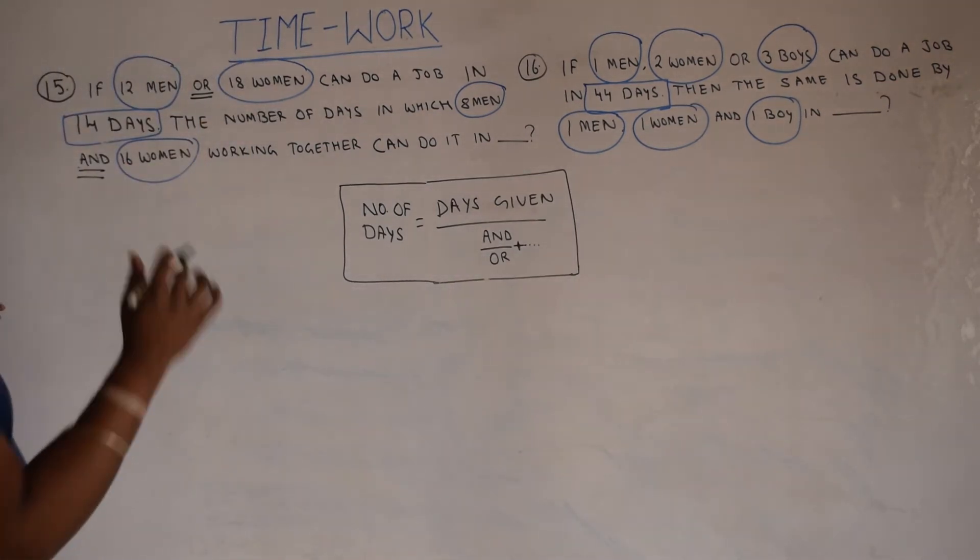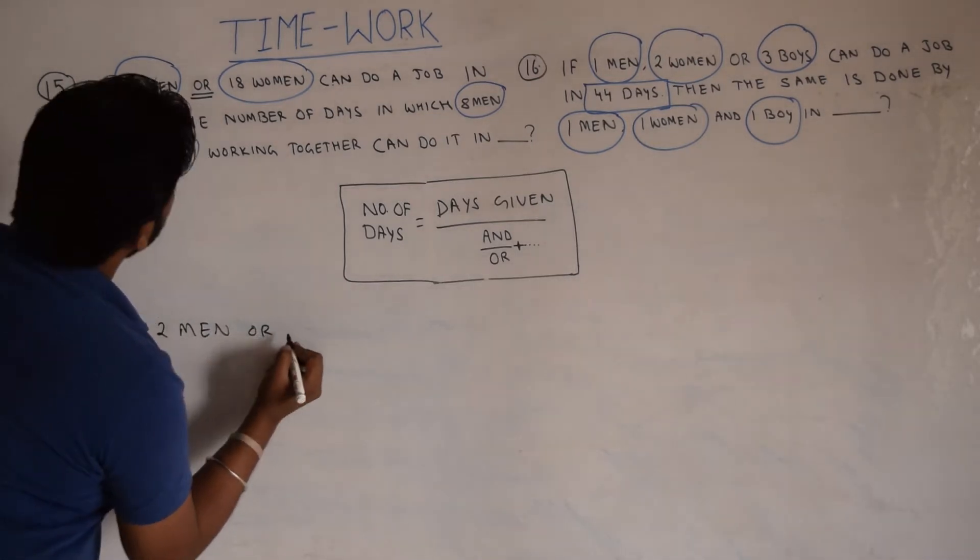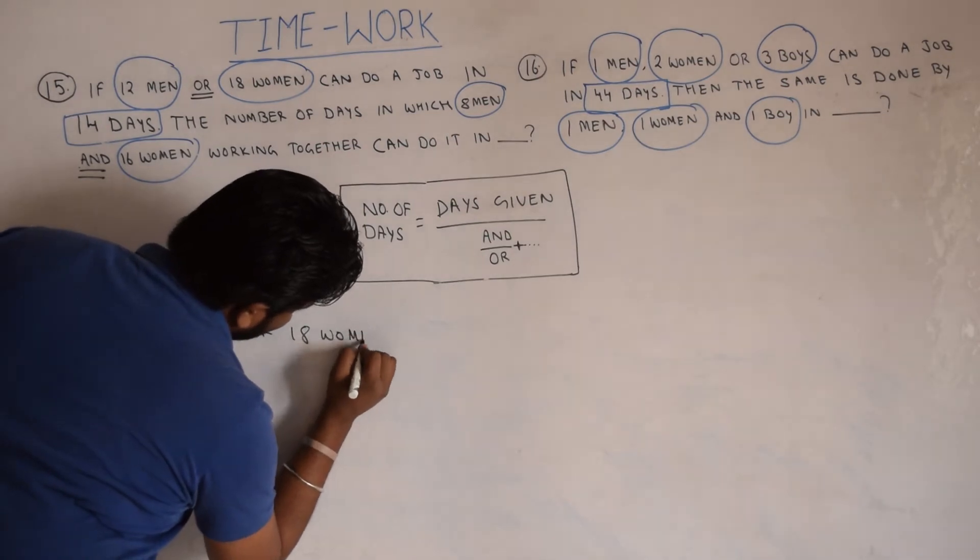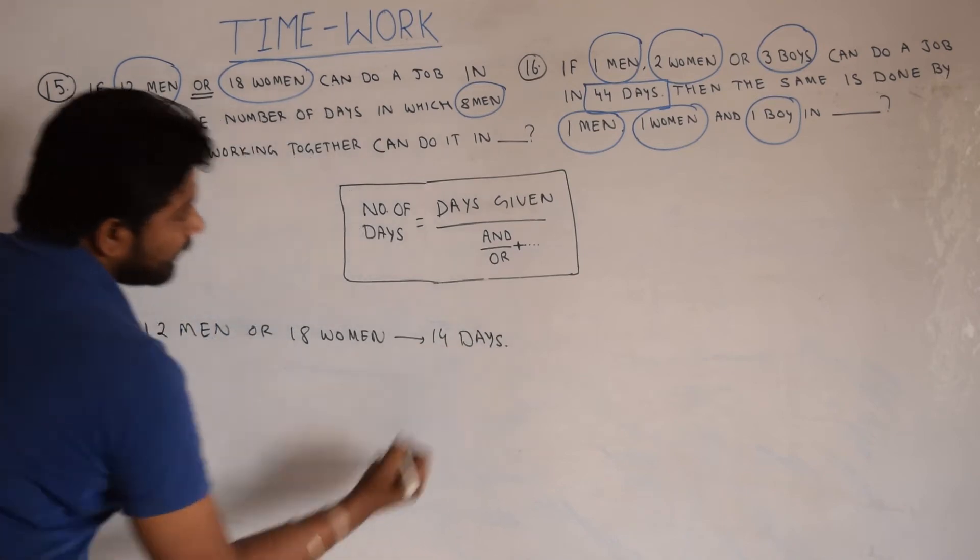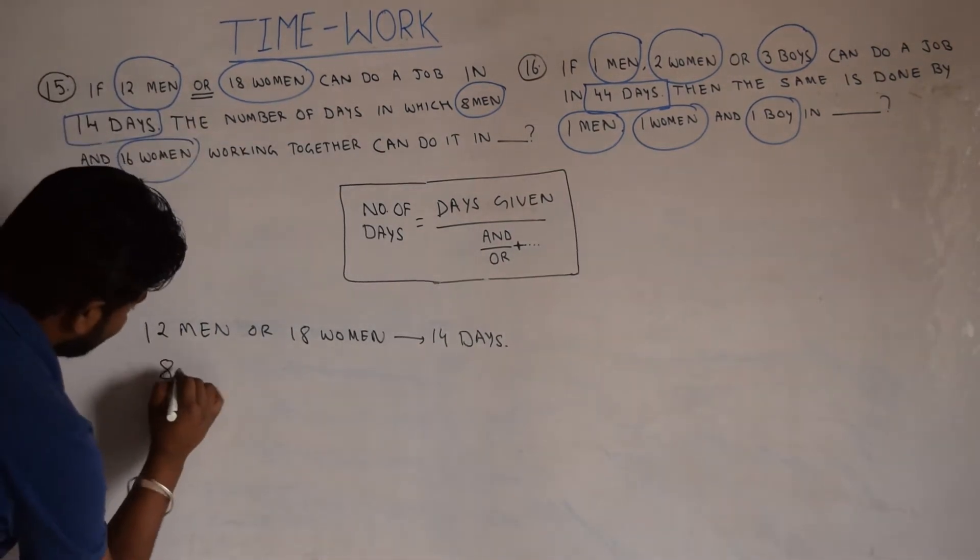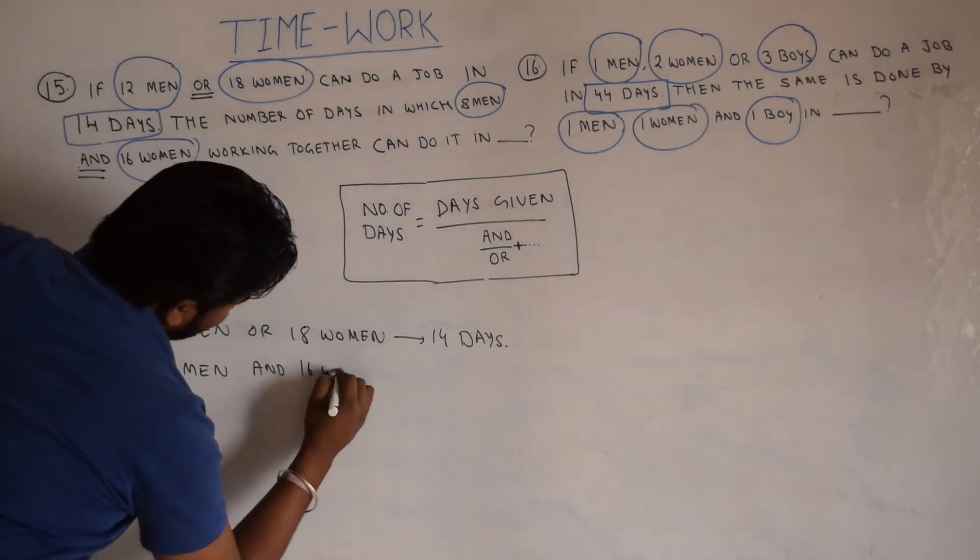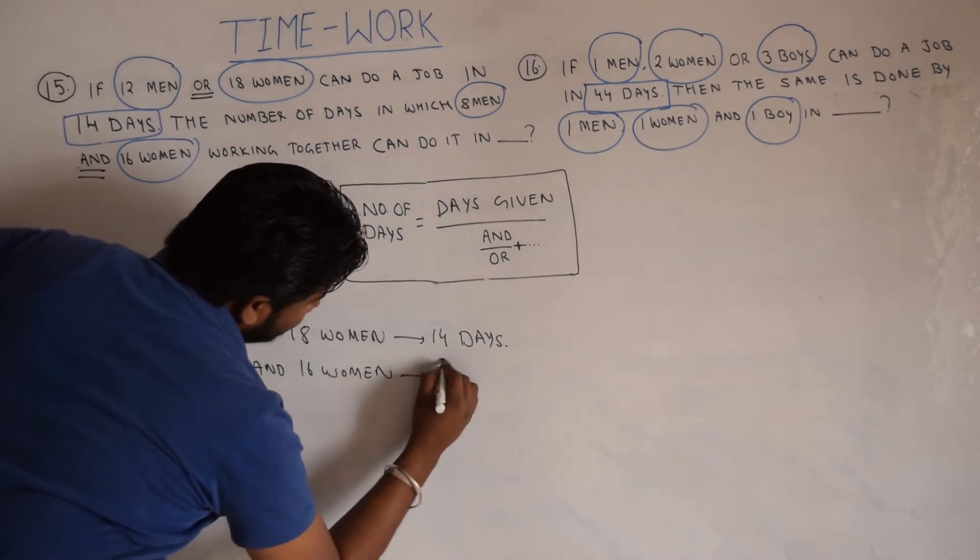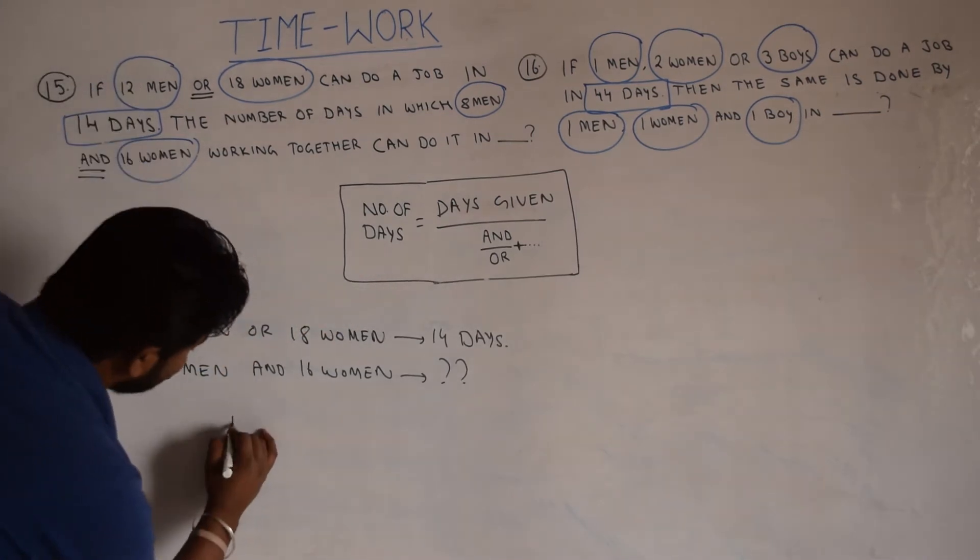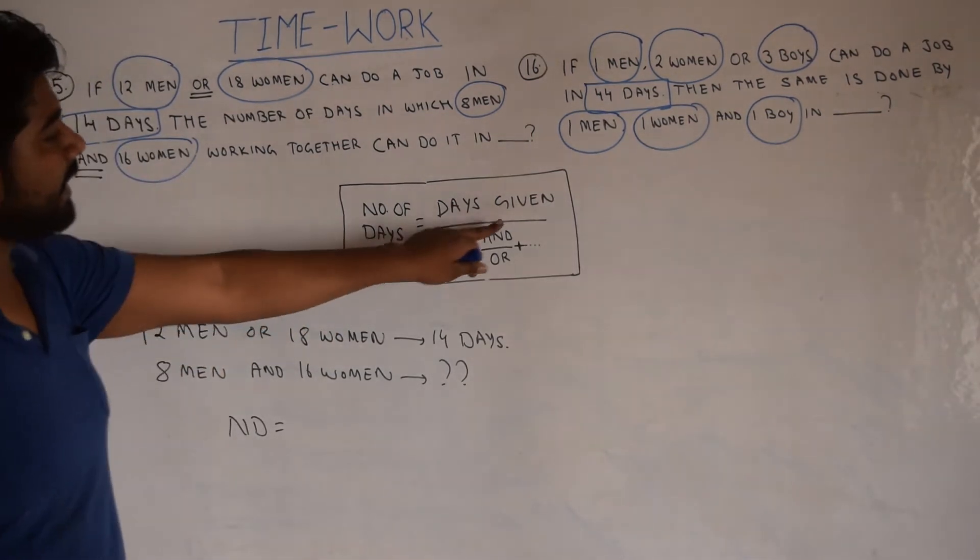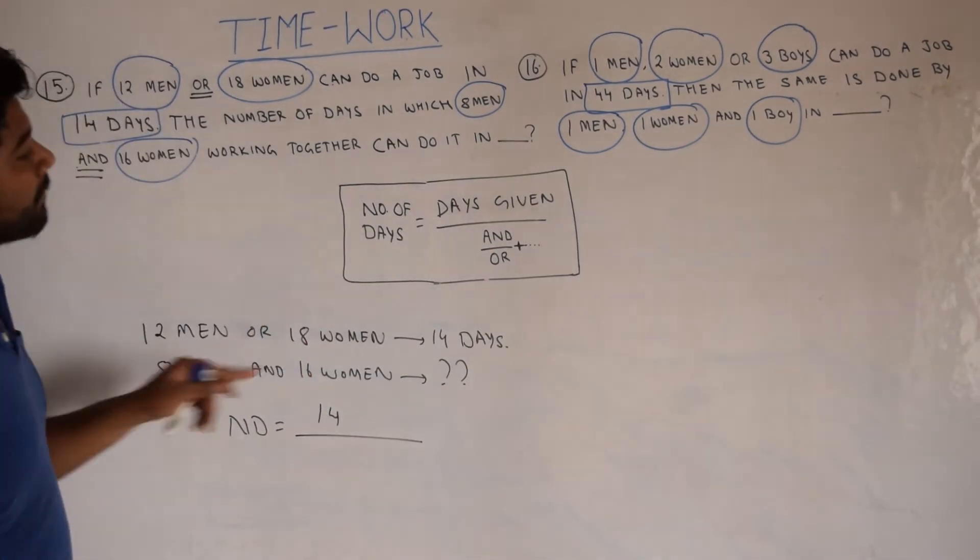First we write the information given in the question. What's given? 12 men OR 18 women can complete the work in 14 days. Next, 8 men AND 16 women can complete the work in how many days? So we'll apply the formula number of days directly. Number of days will be equal to days given, which is 14, divided by AND upon OR.